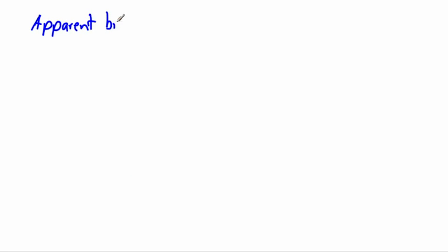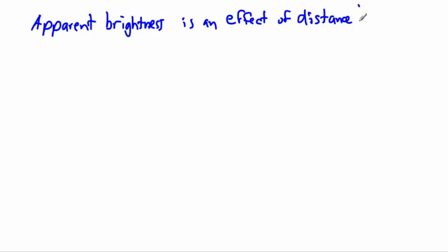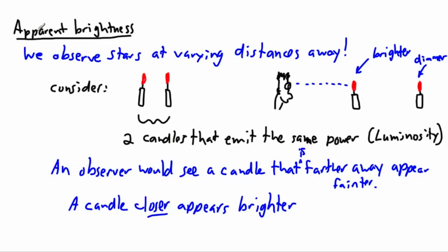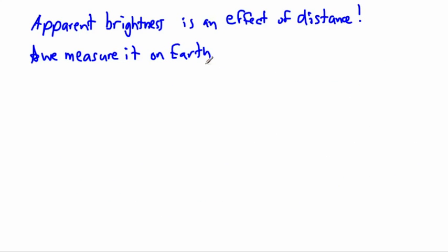Apparent brightness is an effect of distance, and we measure it on Earth — it's actually easily measured. Luminosity is difficult to measure, because for a star, you'd have to go up to the star to know what it really puts out — what its energy per unit time actually is. You'd have to sit right beside the star to do this. But apparent brightness is really easy: all you have to do is just measure it here on Earth.